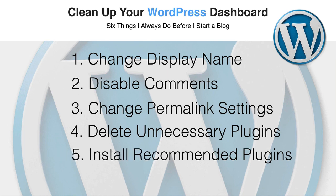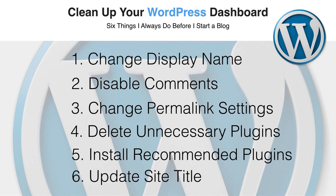Number five: install recommended plugins. I always try to stay away from adding too many plugins to my blogs, but there are a few plugins I always recommend adding to your blog's infrastructure, and this tip will cover those. Number six: update site title. By default, WordPress pre-names your site and pre-determines your tagline. This tip will show you how to personalize your site title and tagline so that it coincides with your blog's content.